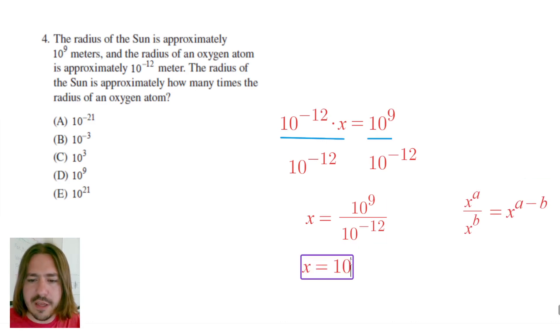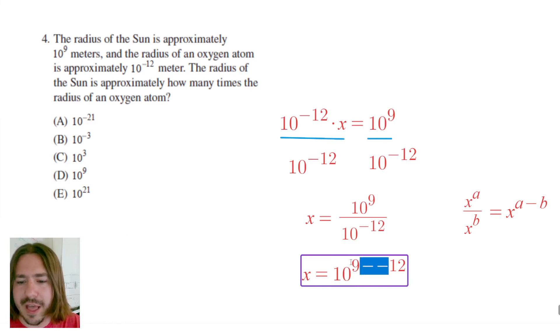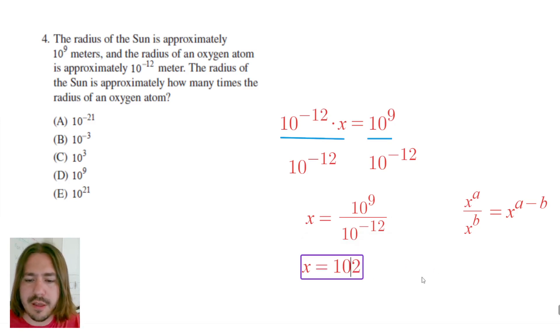So this is going to equal 10 to the power of 9 minus negative 12. Anytime you subtract a negative that is equivalent to adding. So I'm going to change this to 9 plus 12. 9 plus 12 is 21, so that's going to be our answer here: 10 to the 21st power.